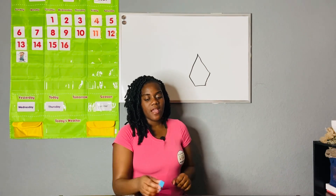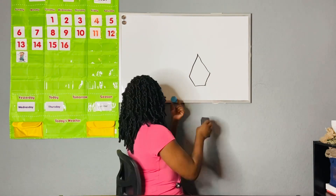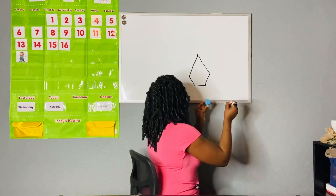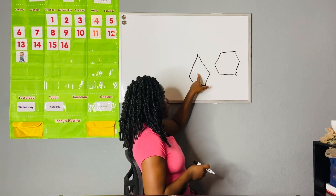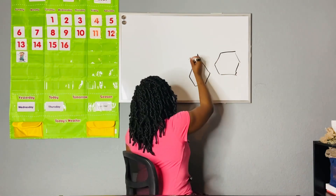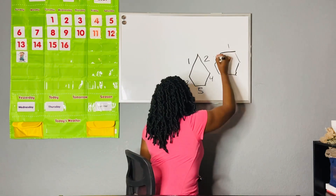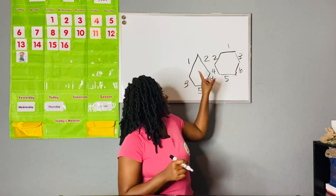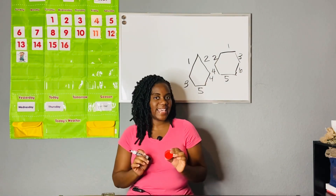Our next shape is a hexagon. Let's draw our hexagon, and I'm going to leave the pentagon up so you can see the difference. The pentagon has five sides: one, two, three, four, five. The hexagon has six: one, two, three, four, five, six. That is the difference between the pentagon and the hexagon.